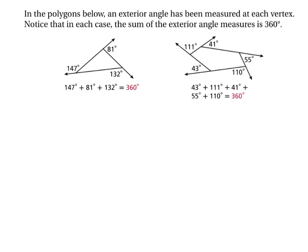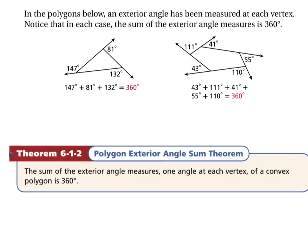Now we're going to talk about exterior angles. In the polygons shown, an exterior angle has been measured at each vertex. Notice that in each case the sum of the exterior angle measures is 360°. This gives us the Polygon Exterior Angle Sum Theorem: the sum of the exterior angle measures, one angle at each vertex of a convex polygon, is always 360 degrees.